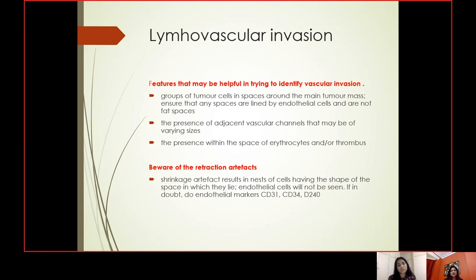Lymphovascular invasion is very important. Features helpful in identifying vascular invasion include a group of tumor cells in spaces around the main tumor mass. Ensure that any spaces are lined by endothelial cells and are not fat spaces. Note the presence of adjacent vascular channels of varying sizes, and the presence within the space of erythrocytes and/or thrombus. Beware of retraction artifacts — shrinkage artifacts where nests of cells take the shape of the space they lie in without visible endothelial cells. If in doubt, perform endothelial markers CD31, CD34, and D2-40.